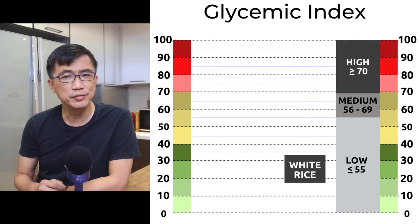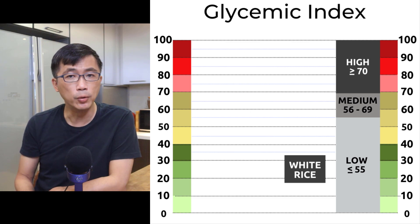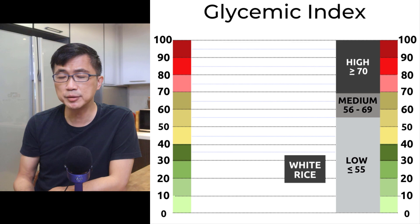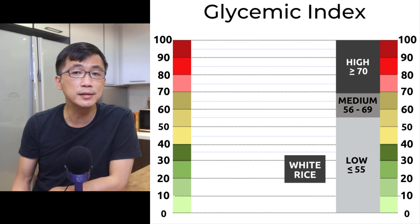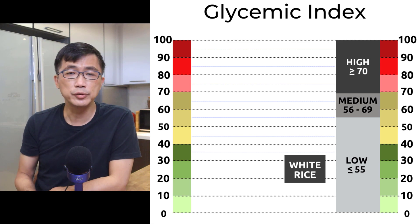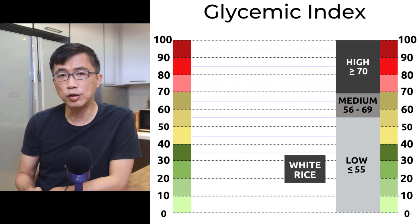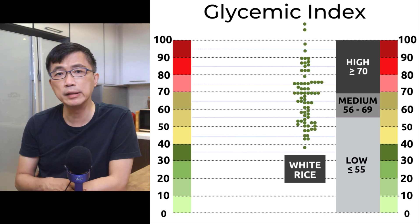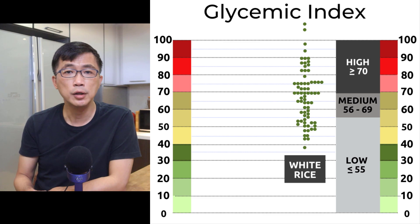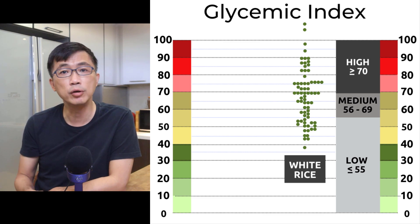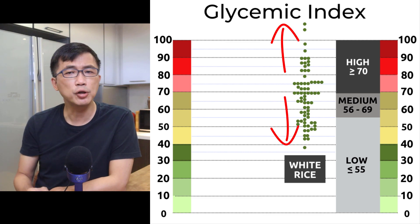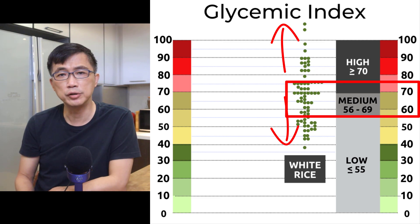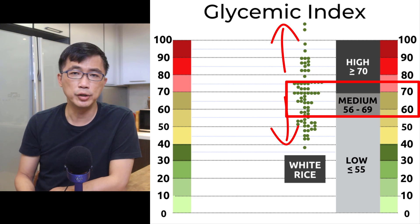Let's start with white rice. I have sieved out from the database, out of 346 records, only the results on GI tests done on white rice. Regardless of the type of white rice — whether it is jasmine white rice or basmati white rice — regardless of whether the white rice tested had undergone any kinds of additional special processing such as parboiling, and regardless of the cooking method, I took the GI value result of each record and plotted them on this GI scale, with each green dot representing the GI value found in each record. You can see the range of GI values of white rice is very wide, but mostly in the medium to high GI range, from the high 50s to 70s.